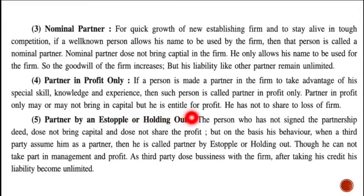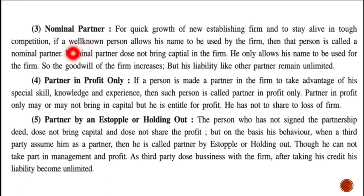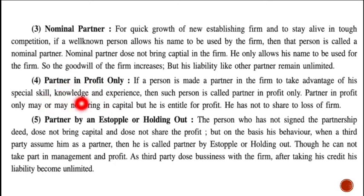Such a partner is entitled to get profit only, and so is called a partner in profit. To clarify the difference: a nominal partner means you are using a well-known person's name, whereas a partner in profit only means you are using someone's skills, knowledge, and experience. That is the key distinction between the two.